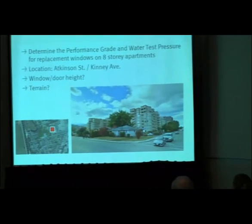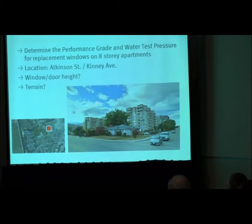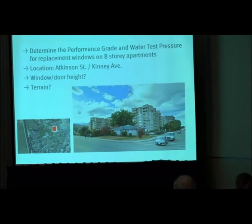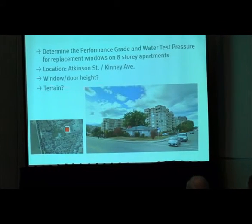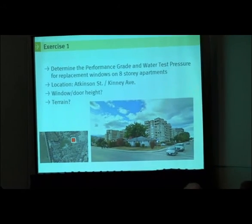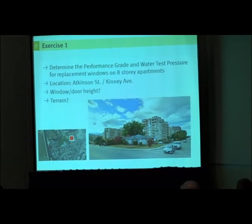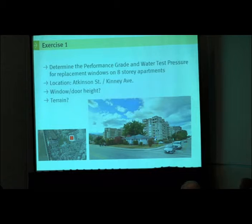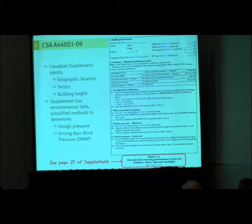In workshops, I do a hands-on exercise using the Canadian supplement with examples such as: determine the performance grade and water test pressure for replacement windows on an eight-story apartment building in Penticton. The first step is to determine the height of the windows and doors — we'll make them all the same for the whole building, say 25 meters. Then we look at the terrain and use Google Maps to determine whether it's open, rough, or mixed.